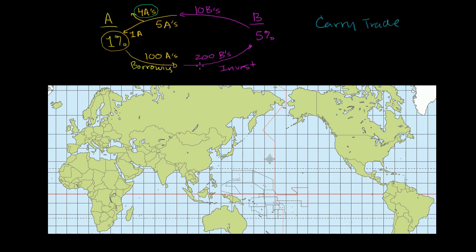And you might think, well, where would this break down? The main area where this would break down is while you are borrowing in A and then investing in B, if A's currency appreciates, or especially relative to B's currency. Because then what happens, even though you have this interest rate discrepancy, those 10 B's are going to give you fewer and fewer A's if A keeps appreciating.